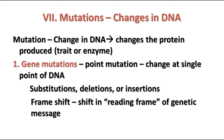Other times a substitution can have a drastic difference. In the case of sickle cell anemia, for instance, the difference in the hemoglobin gene is just one base pair that's changed, and that causes this condition, which can be deadly in some cases. So it just depends on what it is and how it changes.